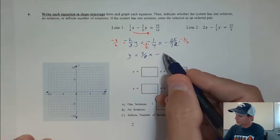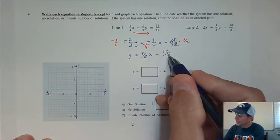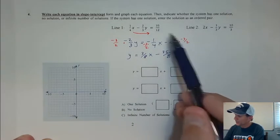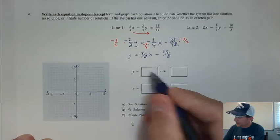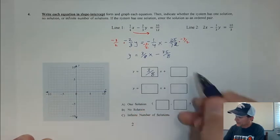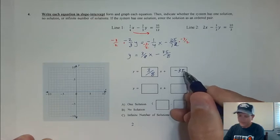So we get 35 over 8. So, yeah, be careful when you copy things down. I make mistakes too. So I get 3 eighths and negative 35 eighths.